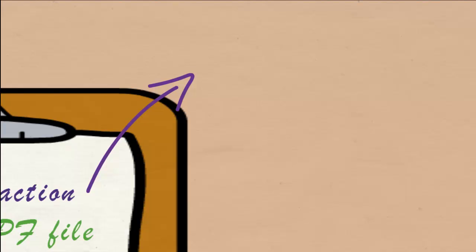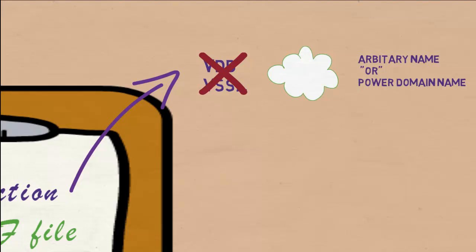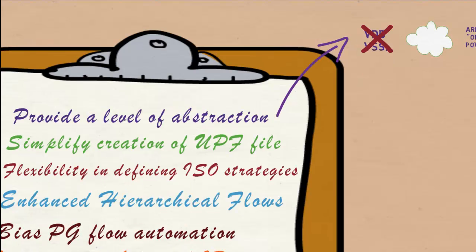Few details now. If you are using supply nets, you need to know their names early in the flow to write the UPF. Whereas supply sets allow you to define supplies at an abstract level using arbitrary names or power domain names.